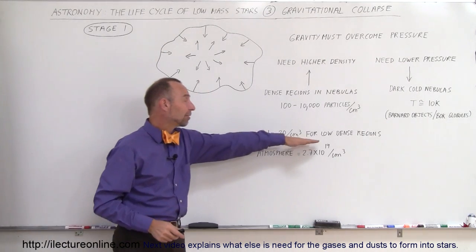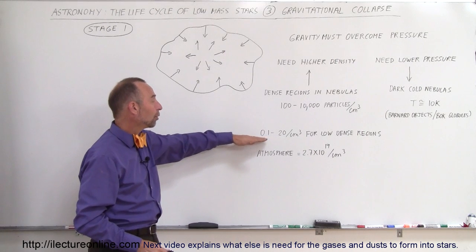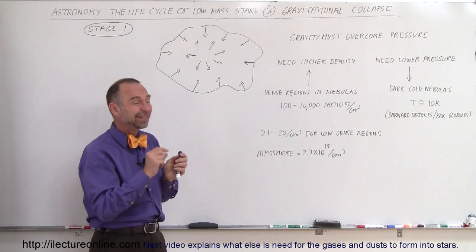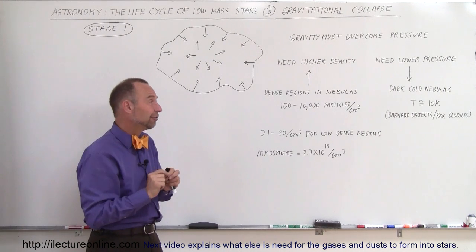Typically, low mass dense regions have anywhere from 0.1 to 20 particles, gas particles and dust particles per cubic centimeter. That's not very much. That's very rarefied.